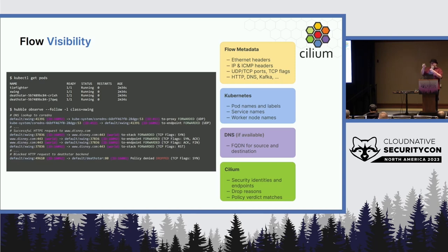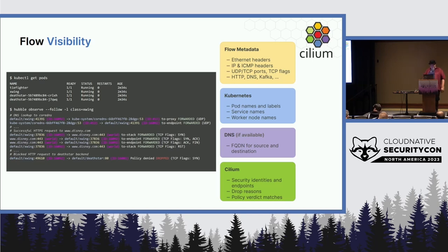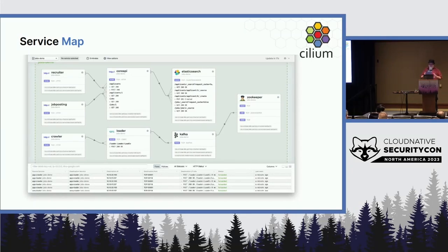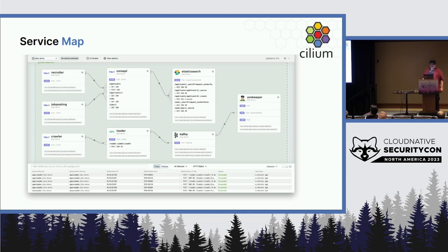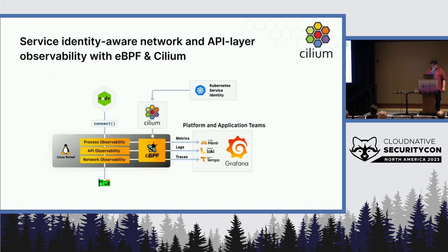If you use cluster mesh, where you can join multiple clusters together, you can expand that domain to understand all connectivity between all of the clusters. It's kind of wild — TCPdump, but galaxy-brain TCPdump. The UI component lets you visualize it: see what workloads are dependent on other workloads, what traffic is moving back and forth, whether traffic was allowed or denied, and the identity of that traffic. All of that information is available in the UI.